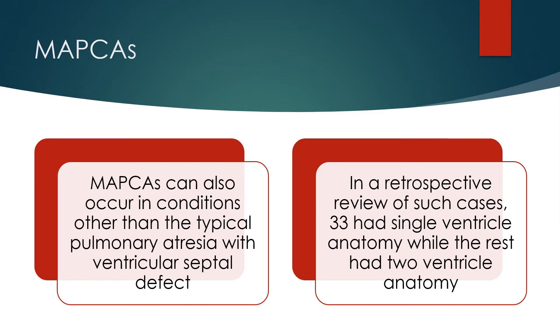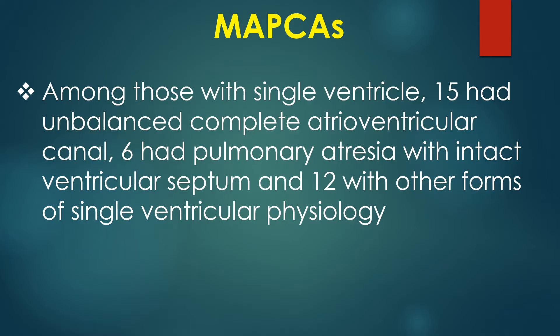In a retrospective review of such cases, 33 had single ventricle anatomy while the rest had two ventricle anatomy. Among those with single ventricle, 15 had unbalanced complete atrioventricular canal, 6 had pulmonary atresia with intact ventricular septum, and 12 had other forms of single ventricular physiology.